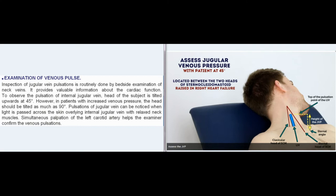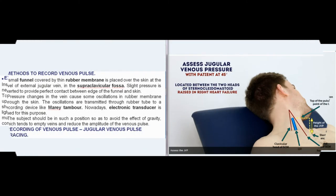Simultaneous palpation of the left carotid artery helps the examiner confirm the venous pulsations. Methods to record venous pulse: A small funnel covered by thin rubber membrane is placed over the skin at the level of external jugular vein, in the supraclavicular fossa.